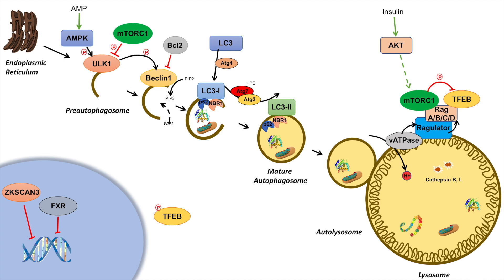AMPK not only activates ULK1, but it also inhibits mTOR complex 1. So it will activate the initiation process of macroautophagy, but also inhibit mTOR complex 1, which is the inhibitor of autophagy. When AMPK inhibits mTOR complex 1, the inhibition that mTOR complex 1 has on TFEB becomes relieved — mTOR complex 1's ability to inhibit TFEB is lost.